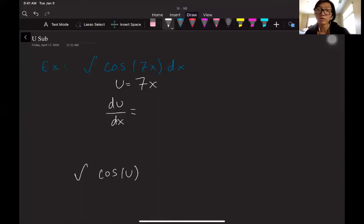to equal 7. That's the derivative of 7x. Now if we think of du over dx as like a normal fraction, we can cross multiply and solve. I want to solve for dx because that's what